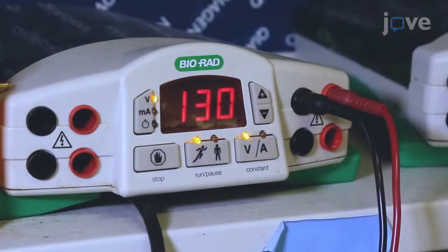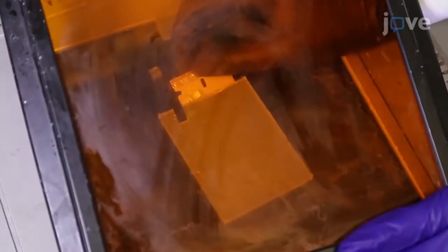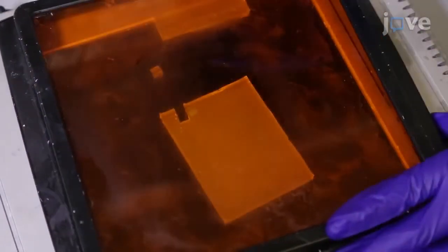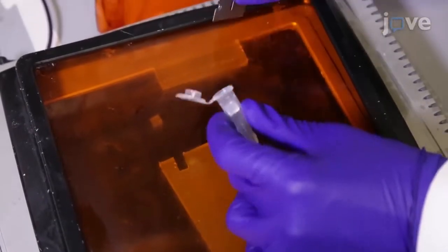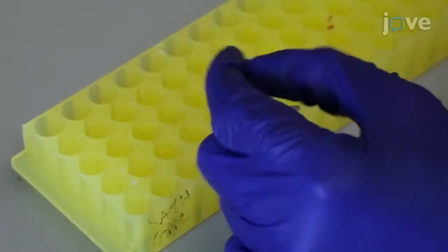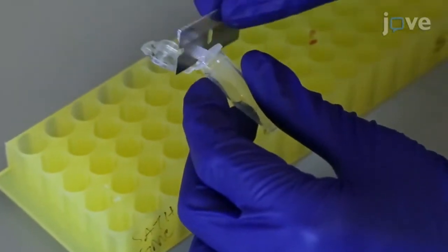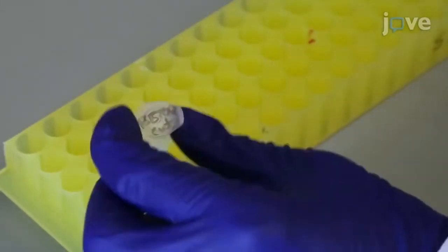Run the digestion products on a 1.5% low melting agarose gel. Cut out the digested vector backbone band that corresponds to a fragment approximately 9 kilobases in size. Transfer this gel slice to a 1.5 milliliter microcentrifuge tube.